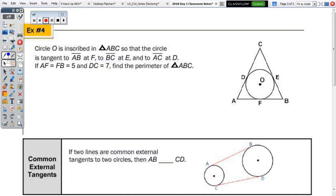So, number 4, it says circle O is inscribed in triangle ABC. So, it's drawn within the inside. So, the circle is tangent to AB. So, it touches the side of triangle ABC such as AB at F, such as BC at E, and AC at D. So, if AF is equal to 5, and DC is 7, find the perimeter.